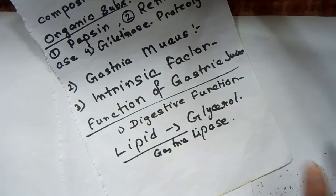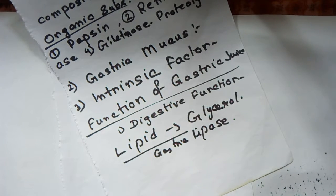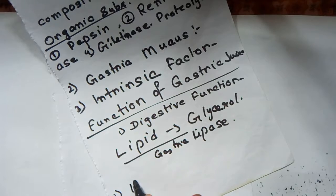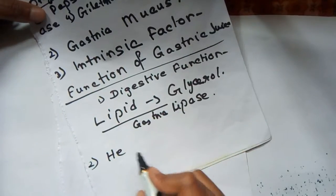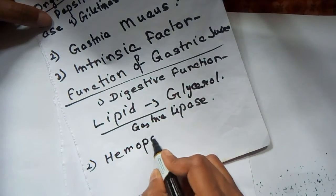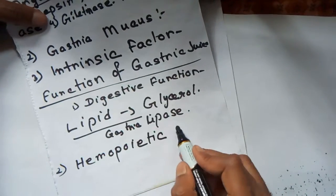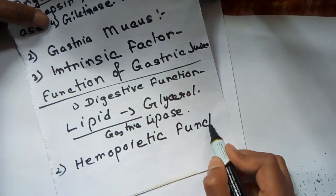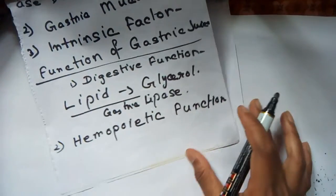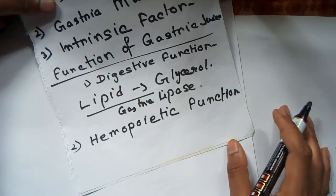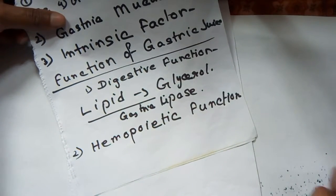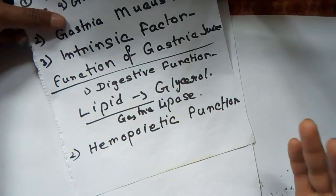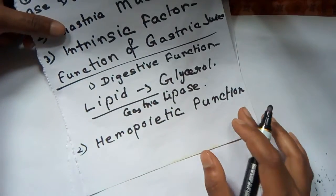Number two is the hemopoietic function. The intrinsic factor present in gastric juice plays an important role in erythropoiesis. It is also necessary for the absorption of the extrinsic factor from the gastrointestinal tract into the blood.